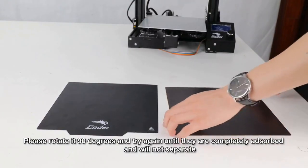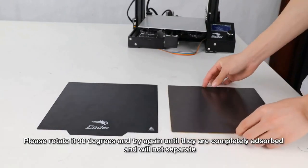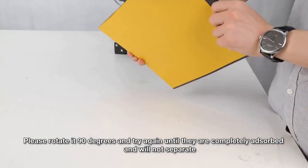To use it, simply stick the bottom plate onto your build plate and start printing. Peel up the top plate with finished prints, then peel off the top plate from the prints. It works with all FDM printer models.